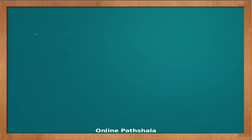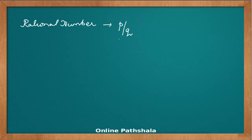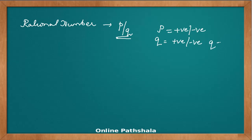Let's look at the definition of a rational number. A rational number is represented in the form of P by Q, where P can be a positive or a negative number, Q can also be a positive or a negative number, and Q is not equal to 0. Now with this definition, let's see whether an integer can be called a rational number.